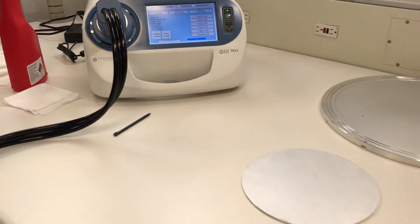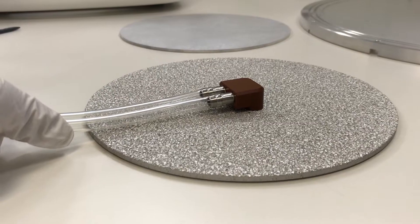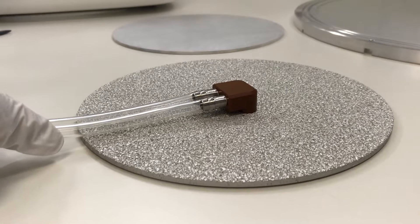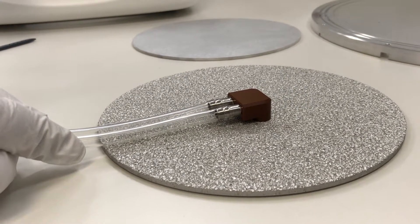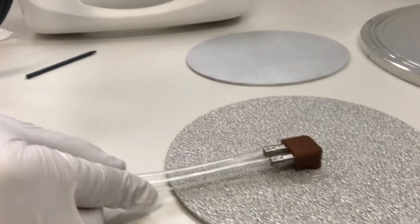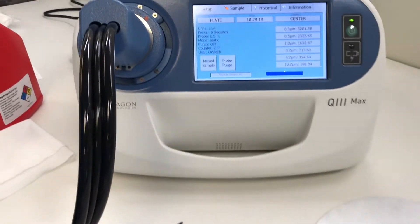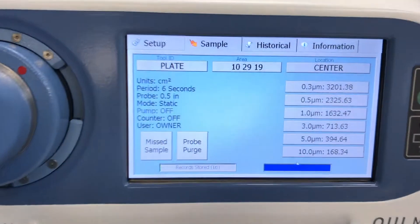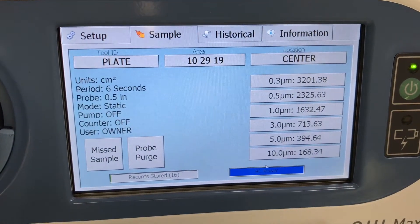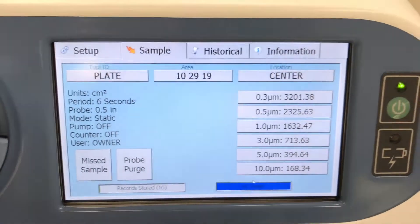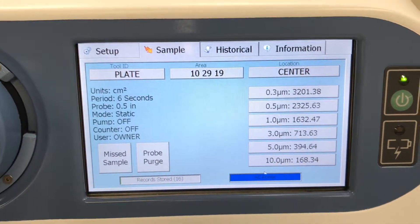Now we are measuring a rough surface. It is very difficult to detect particles with the human eye on a rough surface. However, the Q3 can quickly make these measurements. The results show the surface is contaminated with 3,201 particles greater than 0.3 micron per centimeter squared.